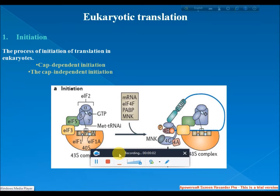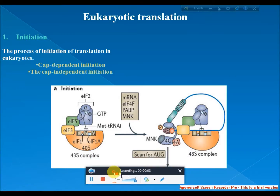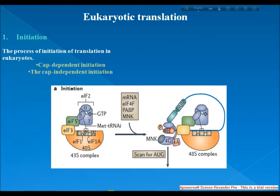Welcome to the Knowledge Club Online. Eukaryotic translation is the process by which messenger RNA is translated into proteins in eukaryotes. It consists of initiation, elongation, and termination.